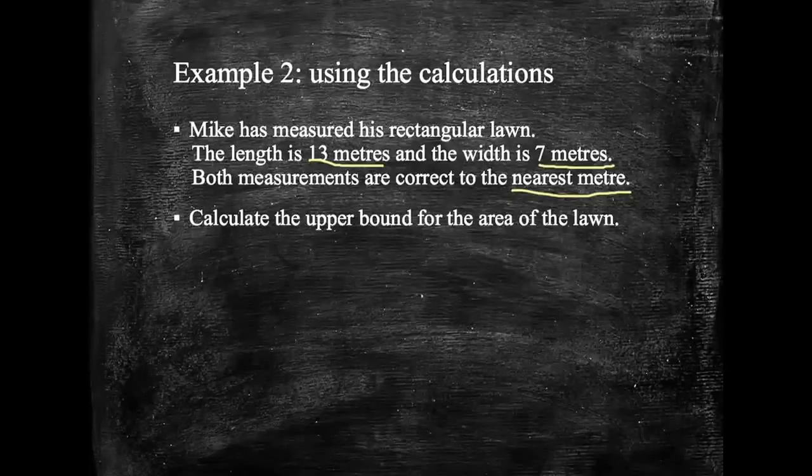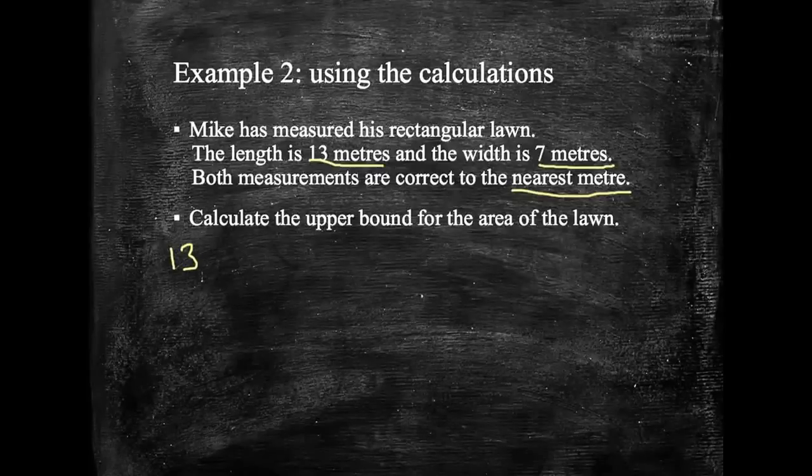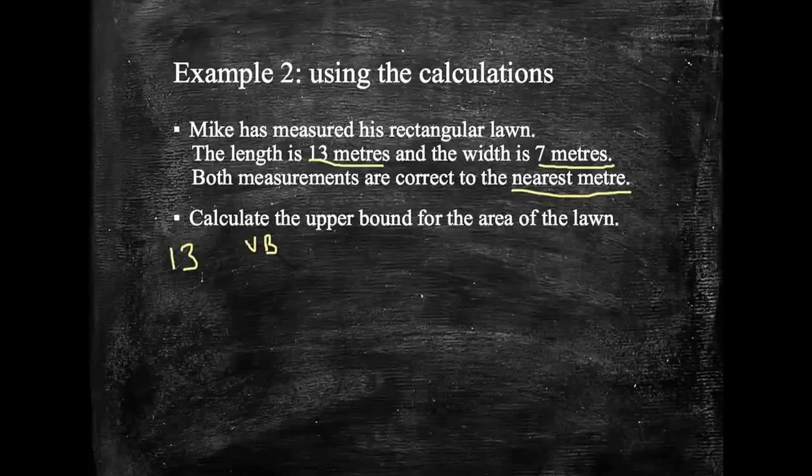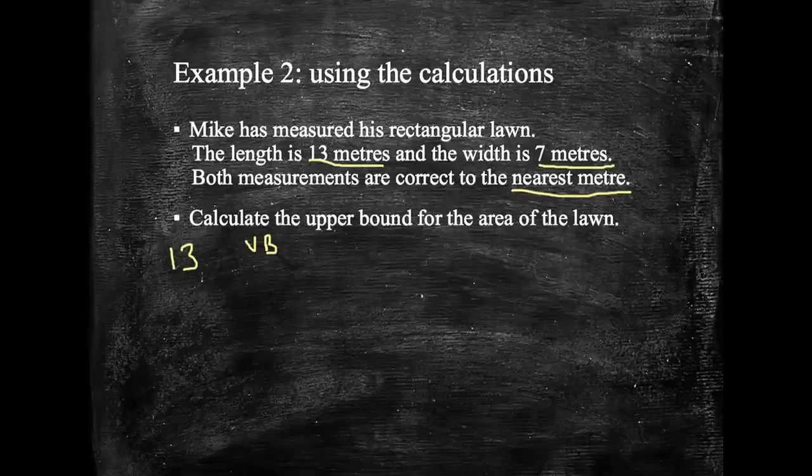Calculate the upper bound for the area of the lawn. Well, this time, I'm going to take the length and think, well, it was 13. The upper bound, so UB, would be to the nearest meter. So nearest meter means I need to add and take half a meter.